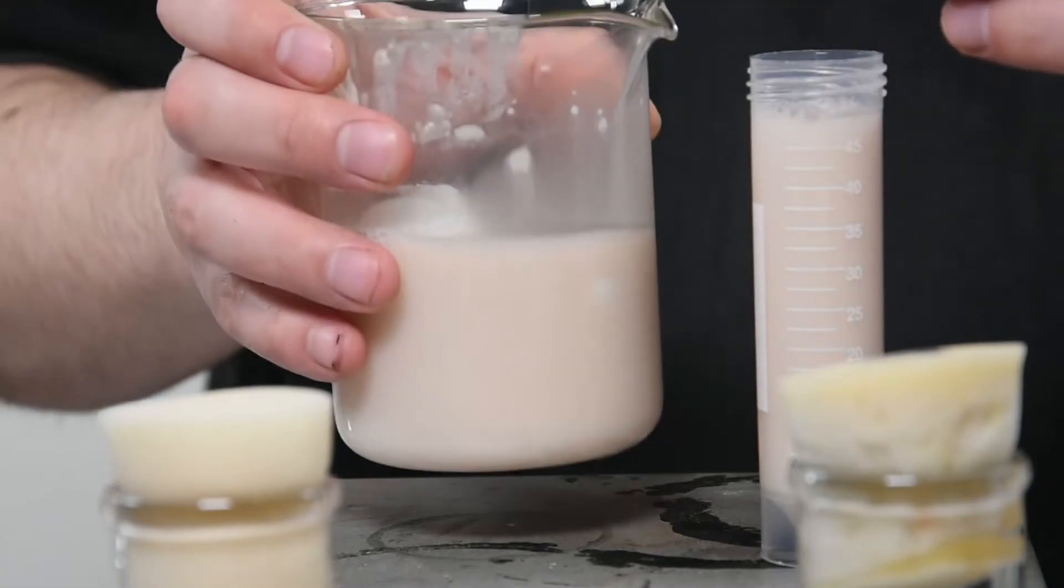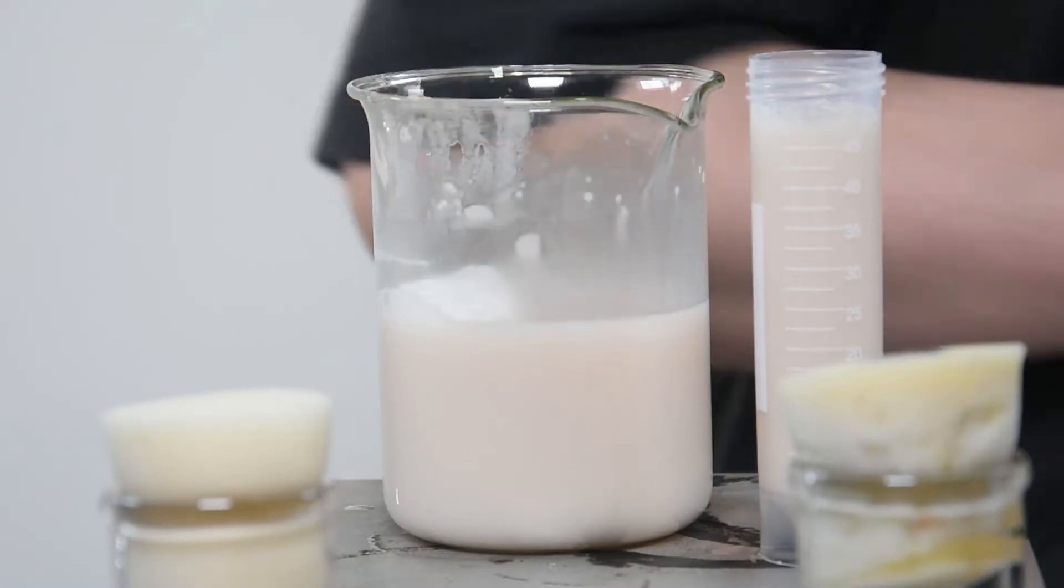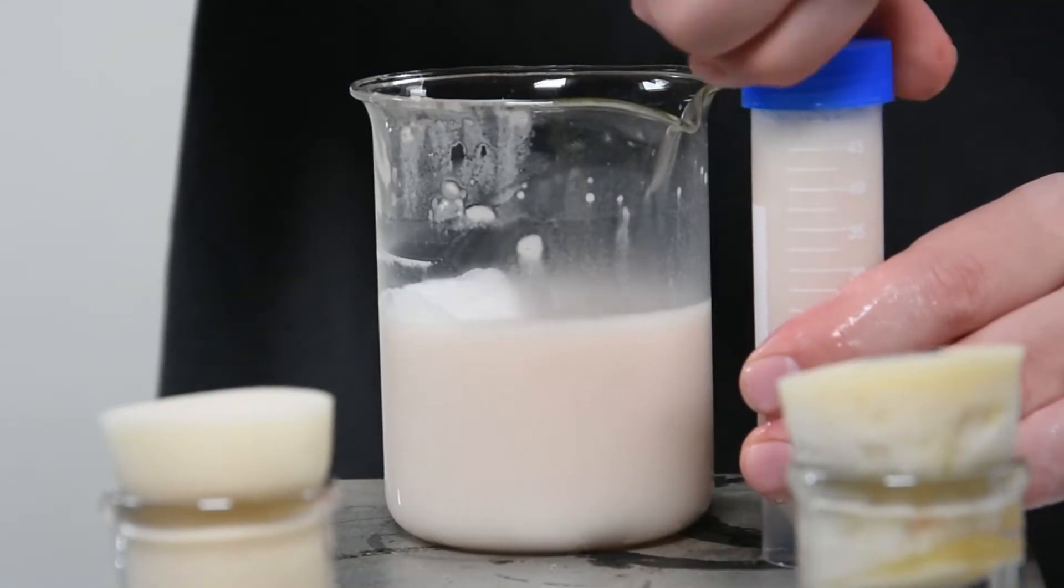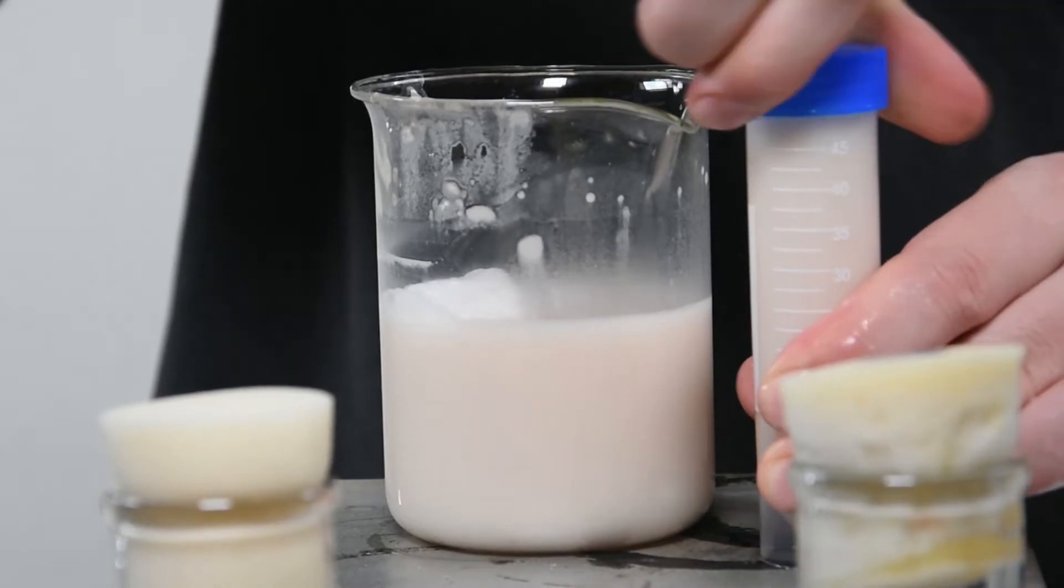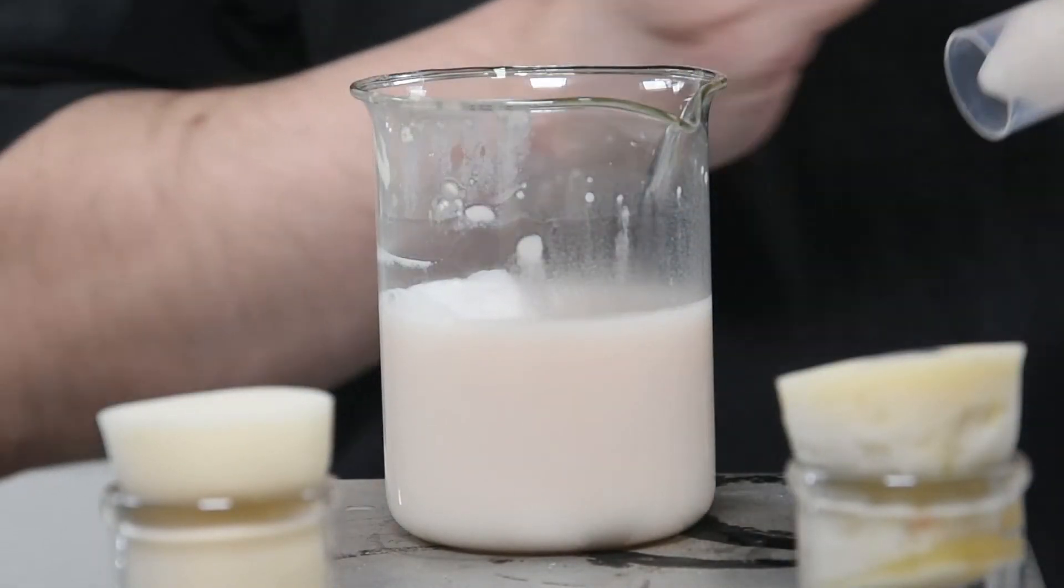These 50 milliliter vials are going to be perfect for when we need to pitch into our one gallon batches or for when I need to take smaller samples and put them into more experiments. Which will be extremely handy for Phil when he needs to repeat parts of this experiment.